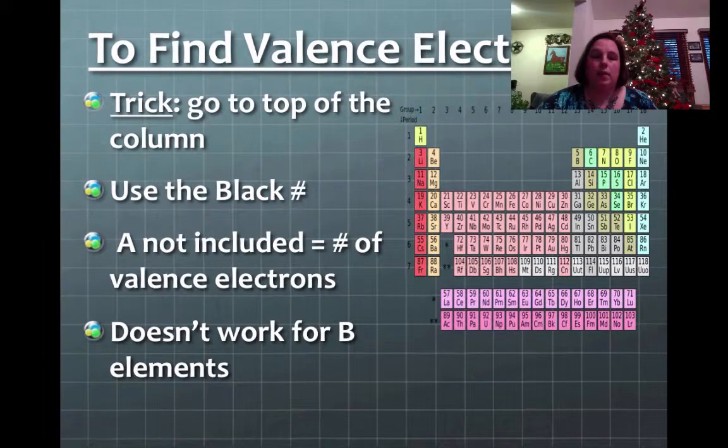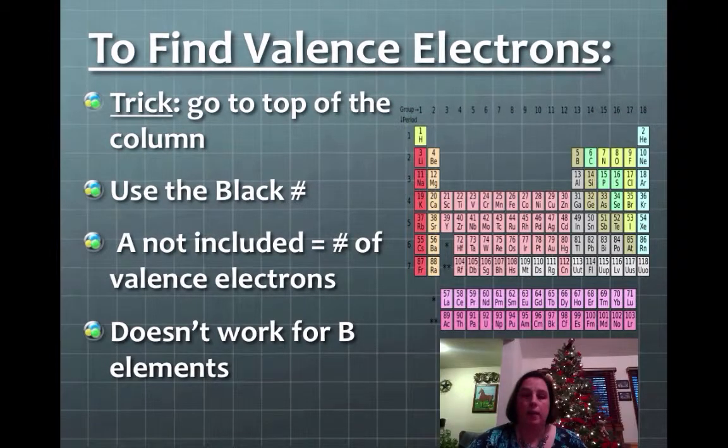To find valence electrons, there is a trick that goes along with it. So if you have a periodic table handy, go ahead and look. So what you're going to say you picked a neon. What you would do is you go up to the top of the column and you look at the number next to the A and it's going to say 8. And that means everybody in that column has 8 valence electrons. Now the cool thing is about the trick is that it only works for the A's. So 1A, 2A, 3A, 4A, all of those.